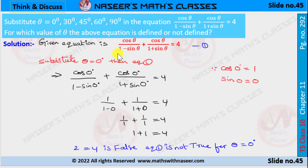So the given equation is cos θ / (1 − sin θ) + cos θ / (1 + sin θ) = 4. Let this be equation 1.